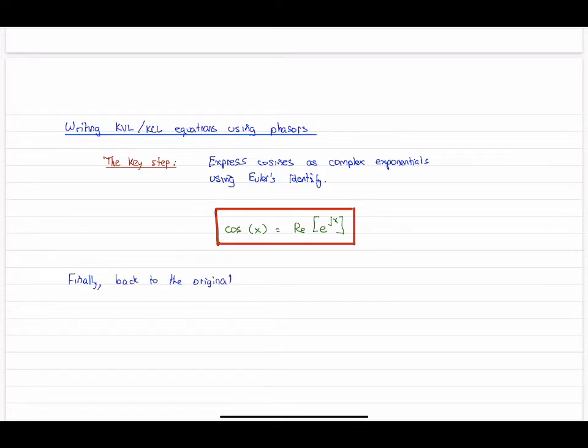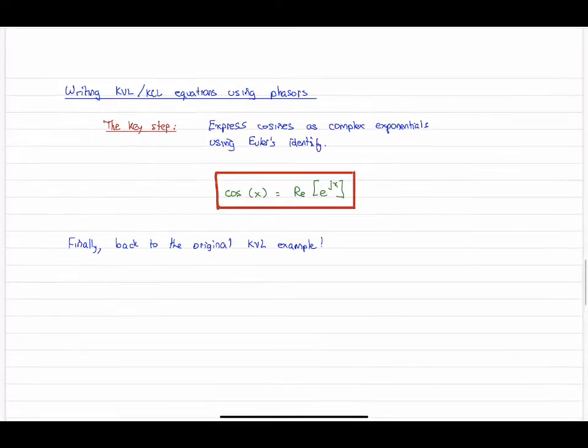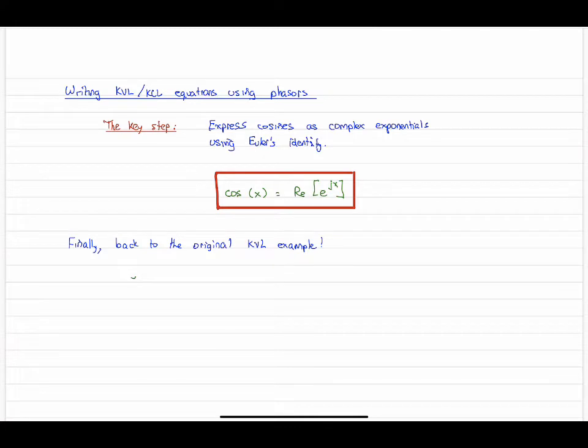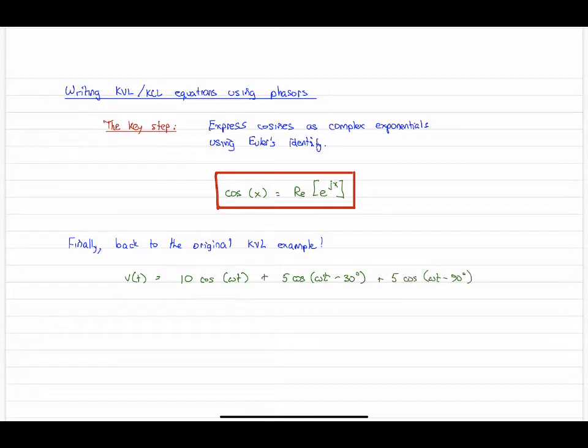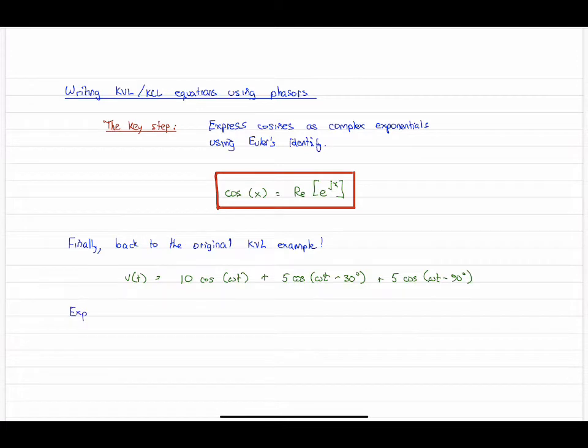We're now ready to go back to our original KVL example and make this substitution for the three cosine waves we were adding up. Just to remind you, this is what we were trying to solve: the addition of three cosine waves that are all a little bit different. They all have the same frequency, which is important, but all have varying magnitudes and angles.